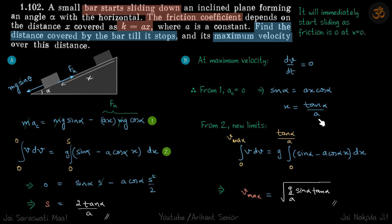So when x is this, what is the velocity? We'll write our second equation again, and this time limits of v will be from zero to v_max and limits of x will be from zero to this. So we do that and we'll find our answer. This is the v_max.